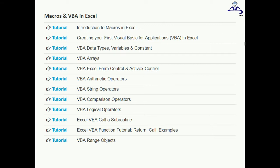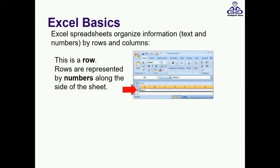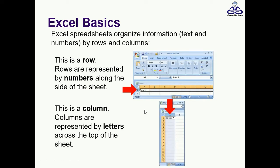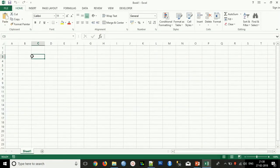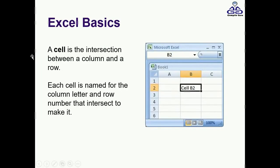Now let's start with Excel basics. Excel spreadsheets organize information, text, or numbers by rows and columns. This is a row and that is a column. Columns are represented by letters at the top. And this is called a cell in Excel.